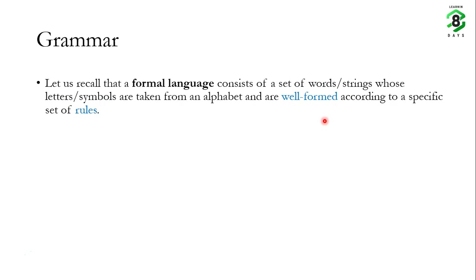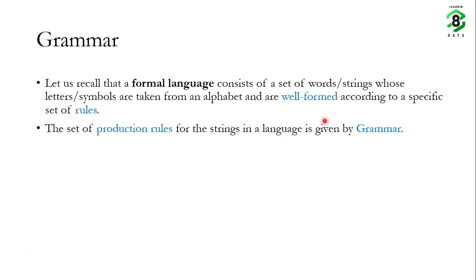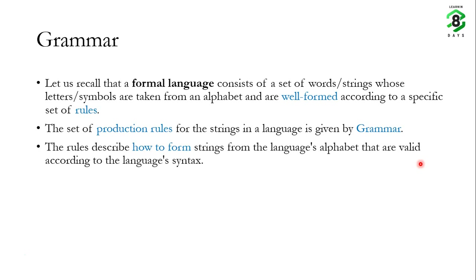Now let us talk about grammar. A formal language consists of a set of words or strings whose letters or symbols are taken from an alphabet and are well-formed according to a specific set of rules. The set of production rules for the strings in a language is given by a grammar. These rules describe how to form strings from the language's alphabet that are valid according to the language's syntax.